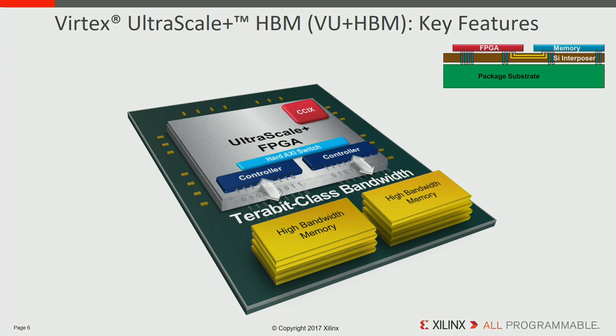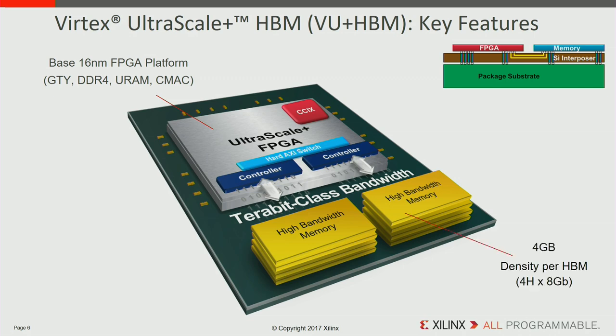We started with the base UltraScale Plus FPGA design, which is already in production with GTs, DDRs, UltraRAMs, CMAXs, LUTs, and CLBs already shipping. We added on the silicon interposer the 4 gigabyte density HBM stack, adding two of those. Each stack has an extremely high 230 gigabytes per second of bandwidth, so with two stacks we have significant total HBM bandwidth.